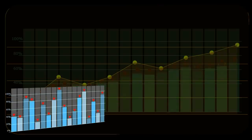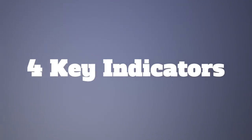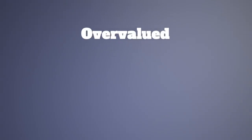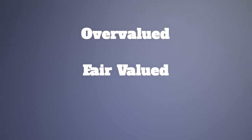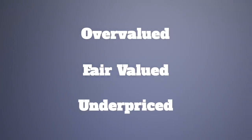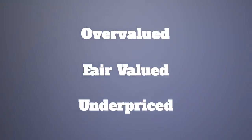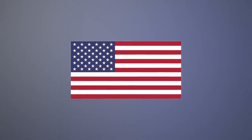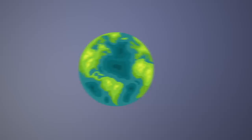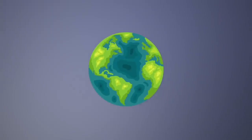In this video we're going to explain the four key indicators that we can use to determine whether a market is overvalued, fair valued, or underpriced. I'm going to use the current USA market as an example, but you can use any market at any time with these four indicators.